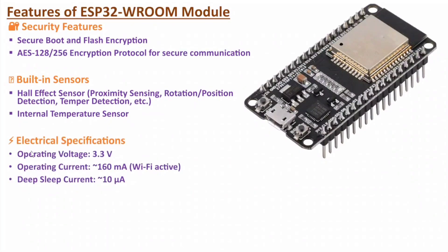The next feature is based on electrical specifications. Here we have an operating voltage of 3.3 volts. Here we have an operating current of 160 milli amperes when Wi-Fi is active. The antenna is useful in case of Wi-Fi connection. In case of deep sleep mode, the current is around 10 micro amperes.